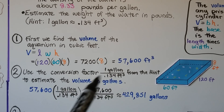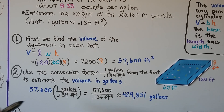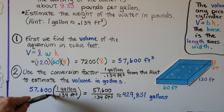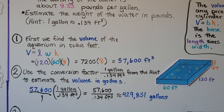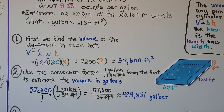Then we use the conversion factor 1 gallon / 0.134 cubic feet to estimate the volume in gallons. We multiply 57,600 by that conversion factor — 57,600 ÷ 0.134 — giving us approximately 429,851 gallons that this aquarium can hold.